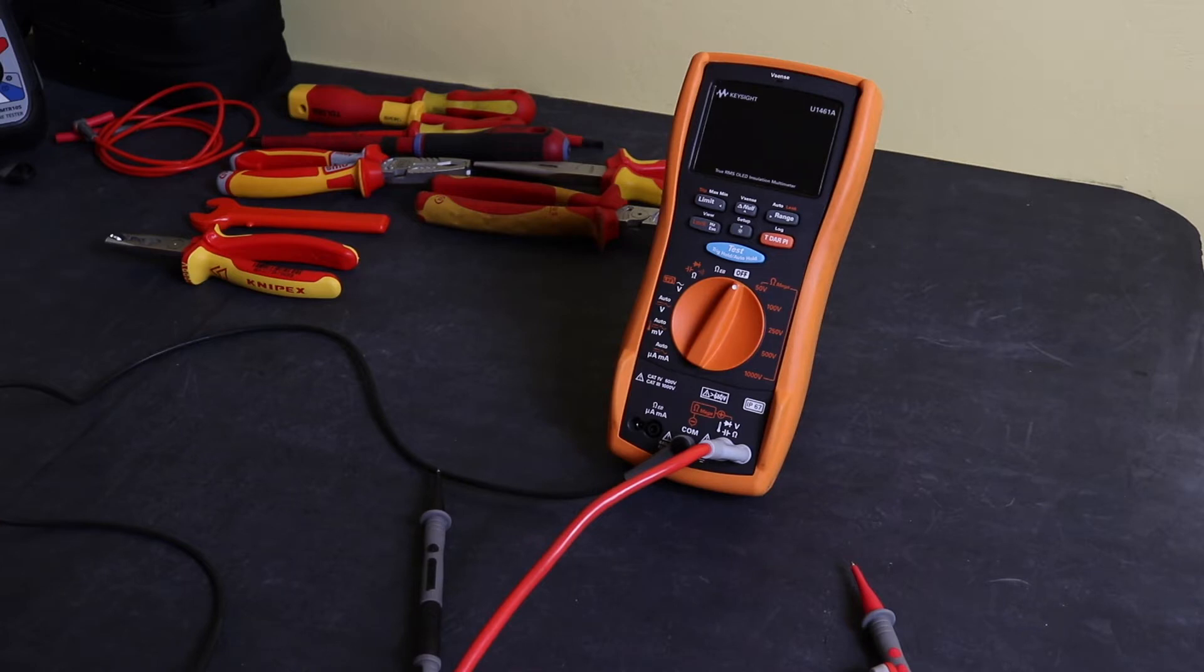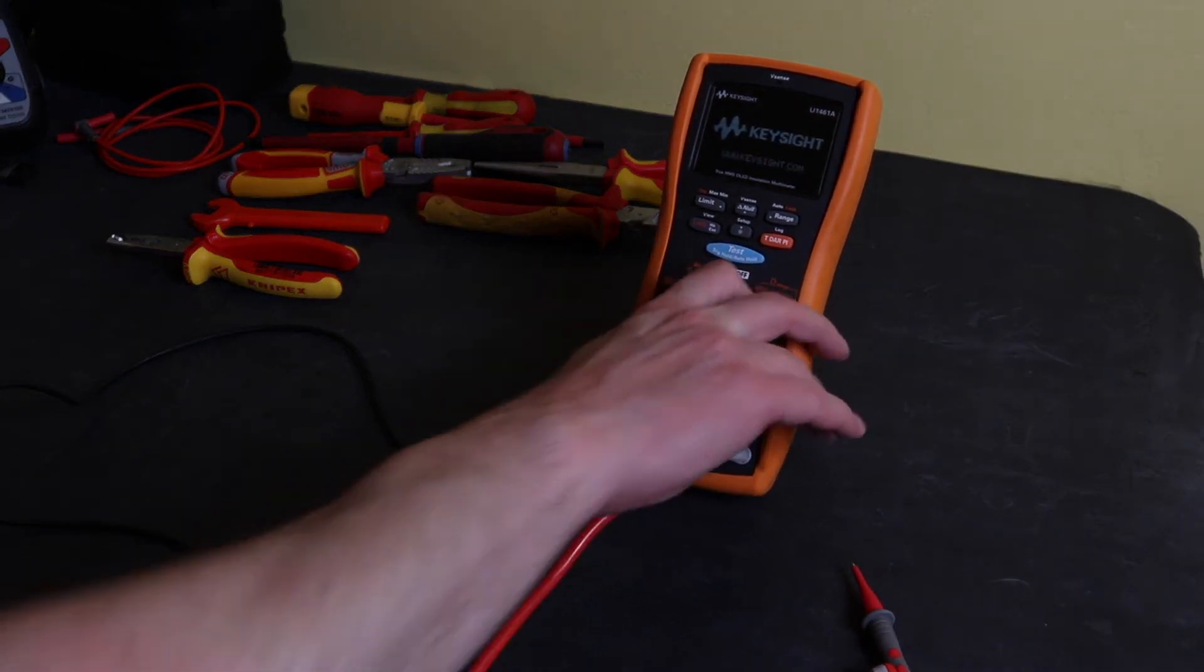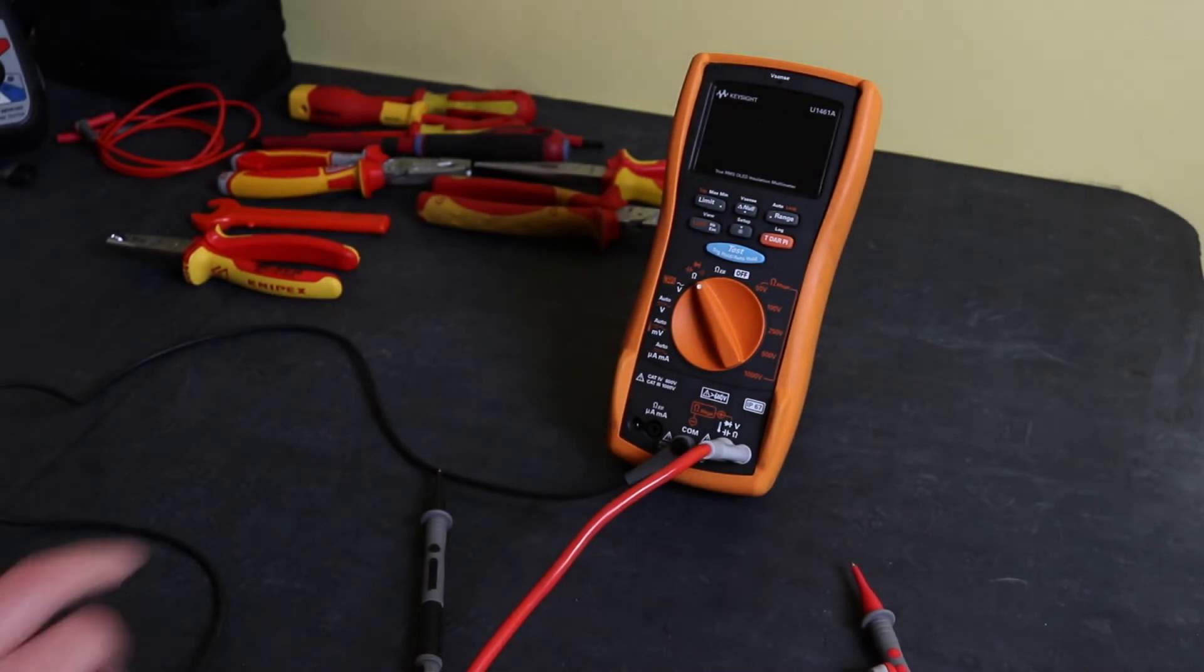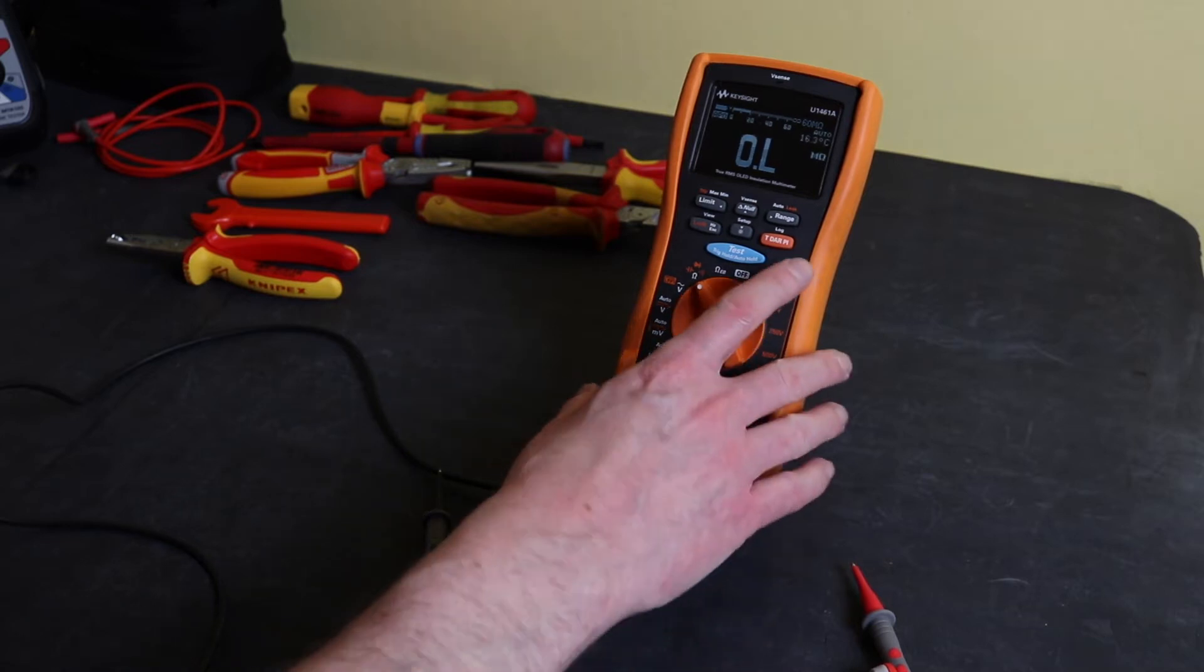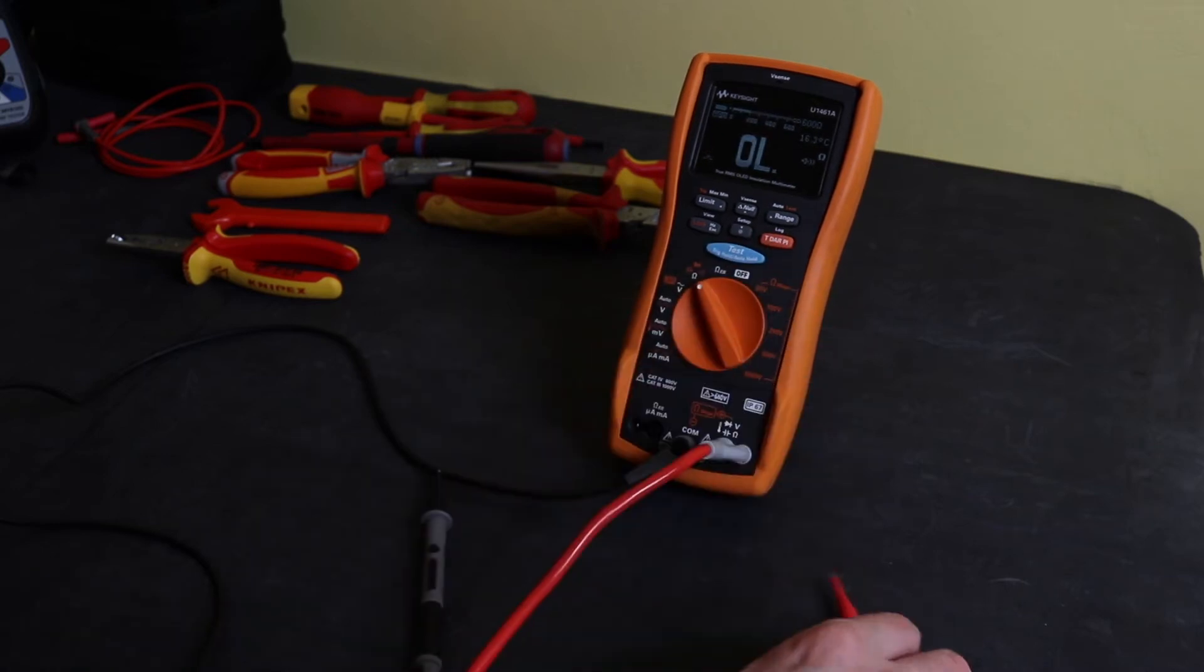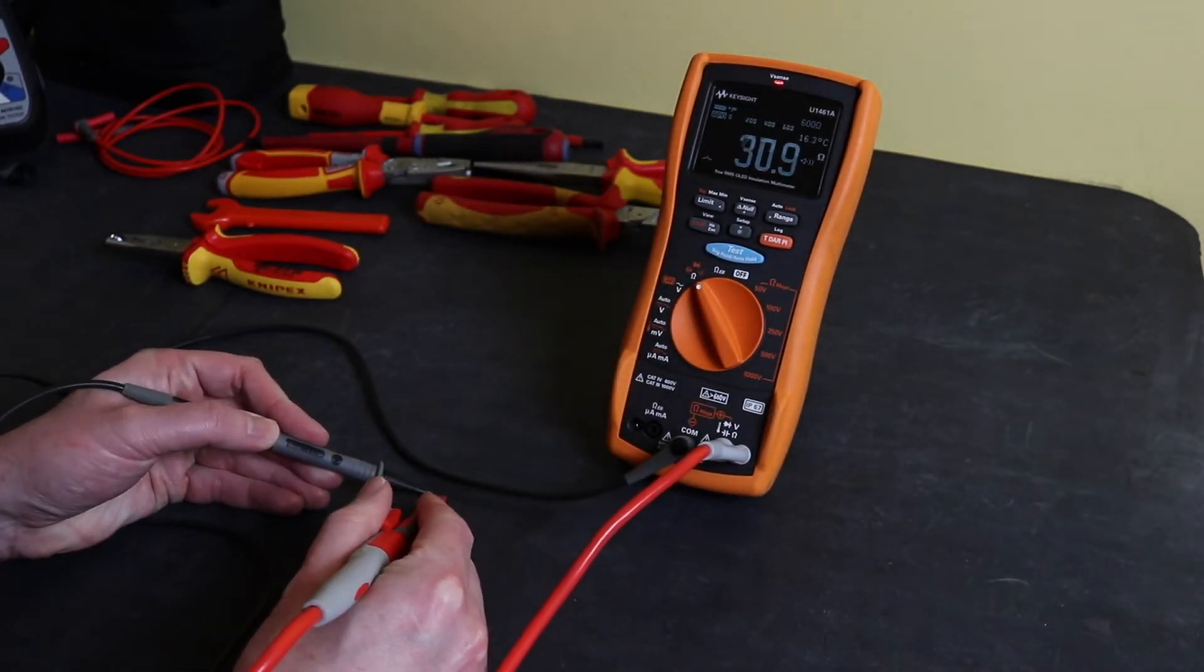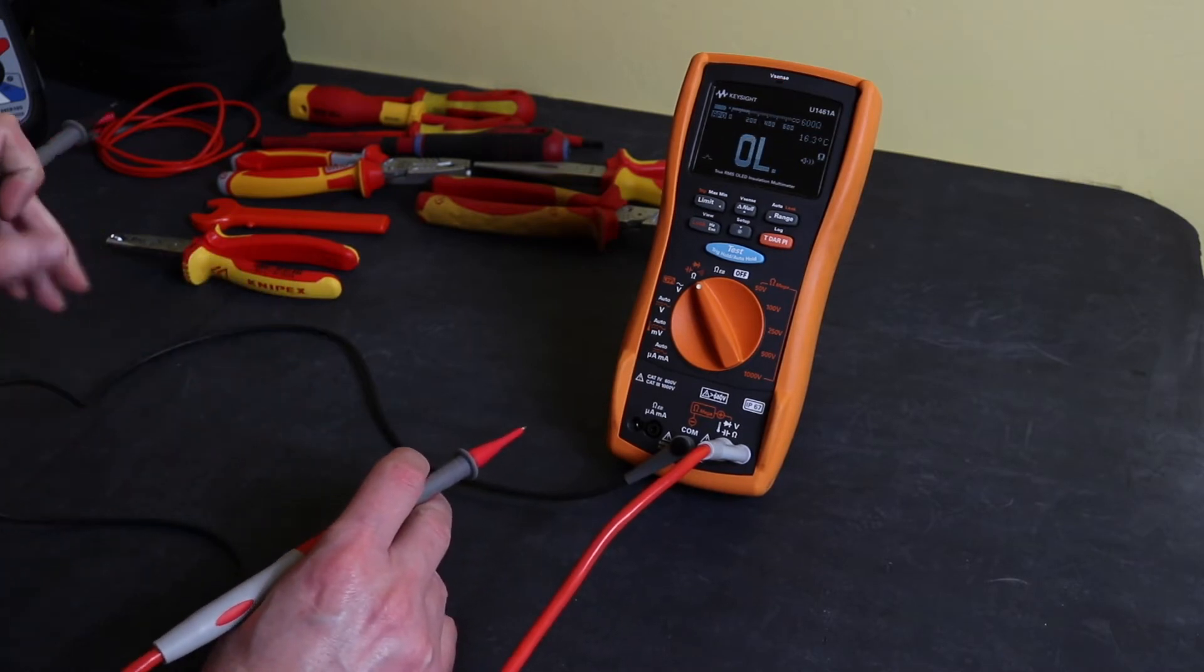That made me collect together some of my insulated tools and carry the same test out on them. He tested his tools with a Klein clamp meter set to the continuity function. I'm going to test mine with the U1461A insulation multimeter. Initially I'm going to have this turned to the continuity function. You can see how we get a zero reading when we get the beep.